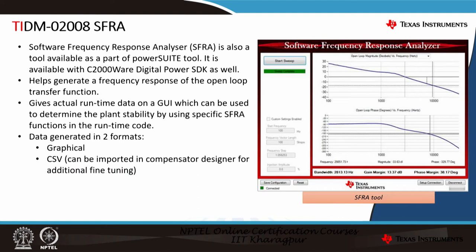The software frequency response analyzer, SFRA, is also a tool available as part of the power suite, again available with the C2000 Digital Power SDK, and can be used as a standalone tool. The special part about this tool is that it gives actual runtime data on the GUI, which can be used to determine the plant stability. The user needs to inject a function specific to SFRA in their runtime ISR or runtime code, which pulls the data for current or voltage as desired, and SFRA will read that data and continuously plot the curve.